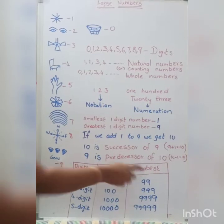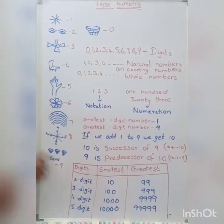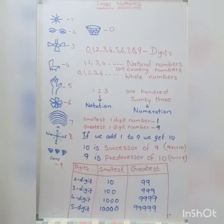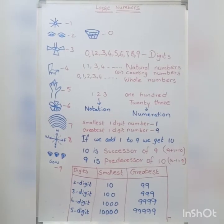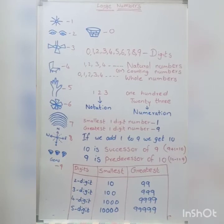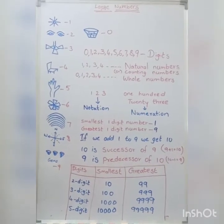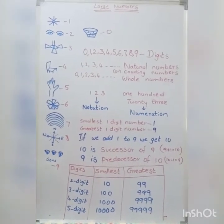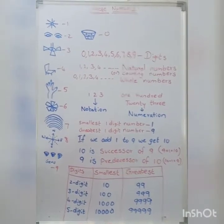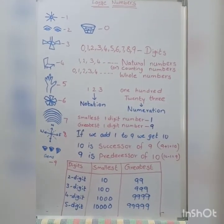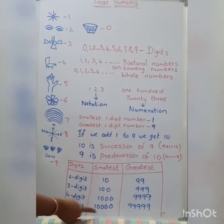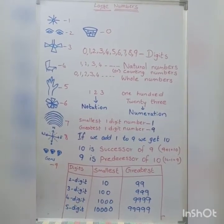Here, smallest and greatest numbers are given. The smallest 2-digit number is 10 and the greatest 2-digit number is 99. The smallest 3-digit number is 100 and the greatest 3-digit number is 999. The smallest 4-digit number is 1,000 and the greatest 4-digit number is 9,999. The smallest 5-digit number is 10,000 — we get it by adding 1 to 9,999.